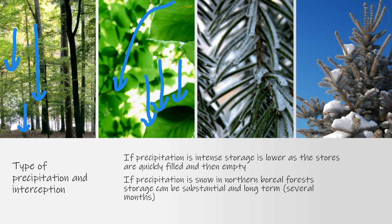In boreal forests, like those in Siberia in the Northern Hemisphere, a substantial amount of precipitation falls as snow. During winter, snowfall accumulates on the branches of the trees, which are structured to catch a huge amount of that snow. It's estimated that between 10 and 20 kilograms of snow can be stored per metre squared of forest. This is very important — in spring the snow is suddenly released in the spring snowmelt, which impacts river levels and the catchment's hydrology.